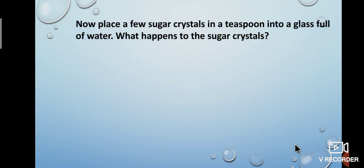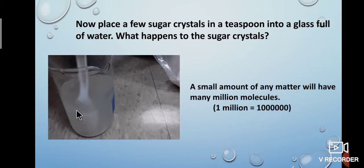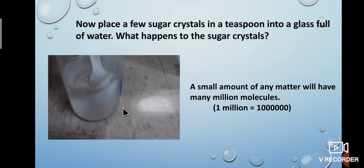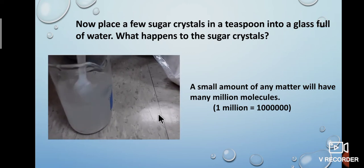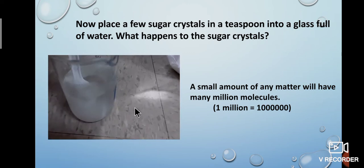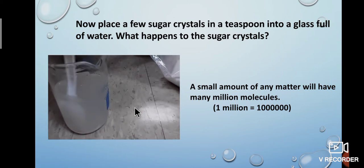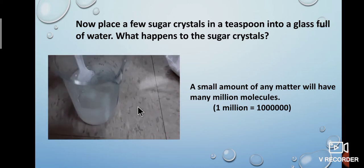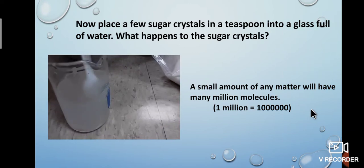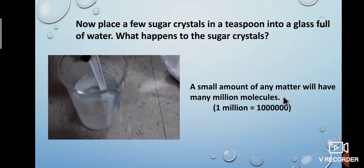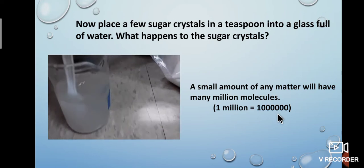Shall we see some activity? Place a few sugar crystals in a teaspoon and add a glass full of water. What happens to the sugar crystals? Sugar crystals are made up of molecules. A group of two or more atoms is called a molecule. When sugar dissolves in water, the sugar crystals break down and the molecules of sugar get distributed in the water, making the water taste sweet. We are not able to see the dissolved sugar particles. Moreover, a small amount of any matter will have many million molecules — one million is equal to ten lakhs.